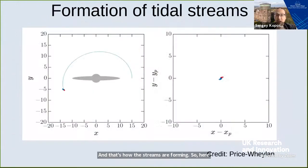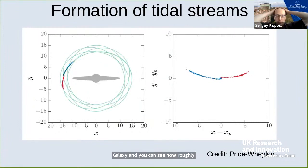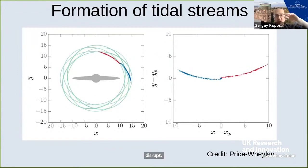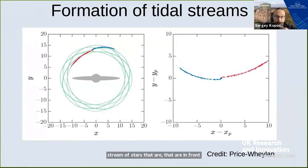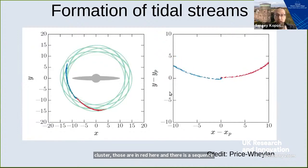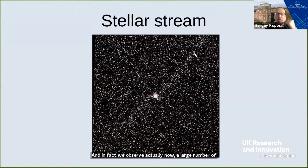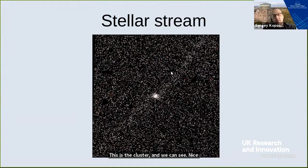Here is an illustration of this process. On the left we see an edge-on view of our galaxy and you can see how roughly the cluster would disrupt. The cluster creates a stream of stars in front of it — shown in red — and a sequence of stars in blue that are trailing the cluster. On the right is a view that follows the cluster alone. We now observe a large number of these stellar streams based on real data — you can see a nice tail emanating from this cluster, with one part leading and the other trailing.